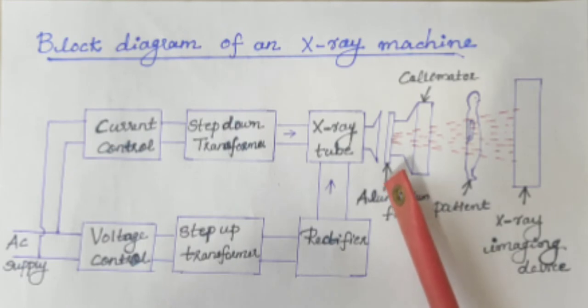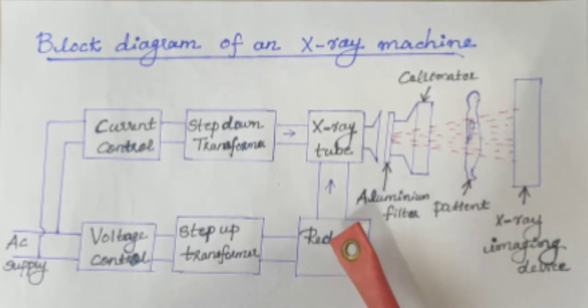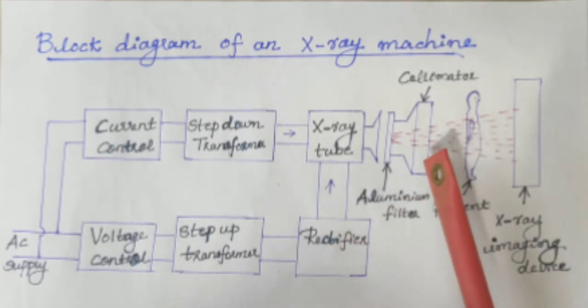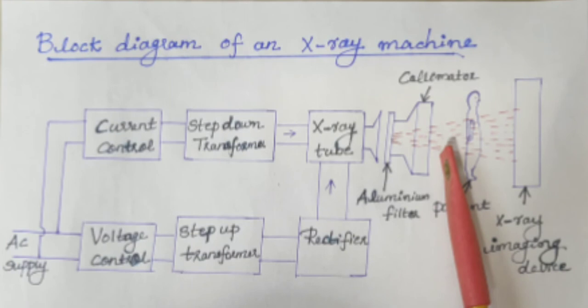Next one is the collimator. It is placed between x-ray tube and the patient and it is also known as beam limiting device. It is used to shape the x-ray beam emerging from the machine.